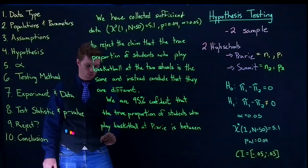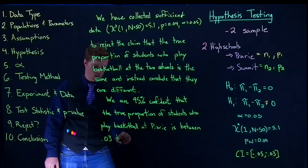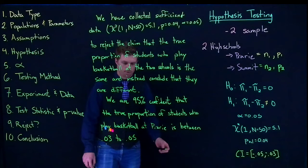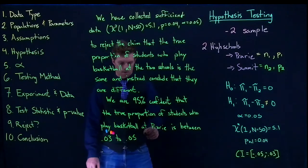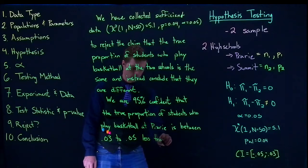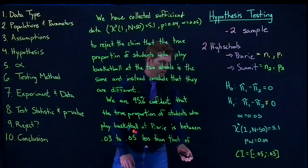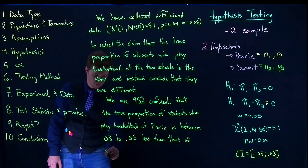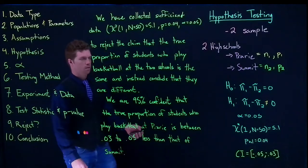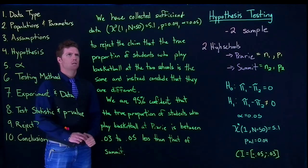So we are smaller by between three to five percentage points. Is between 0.03 to 0.05 less than that of Summit. And that's how we would handle this with proportions.